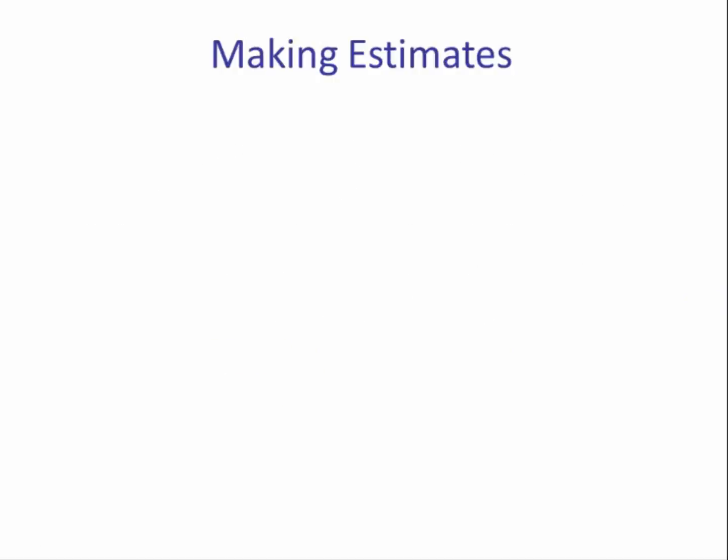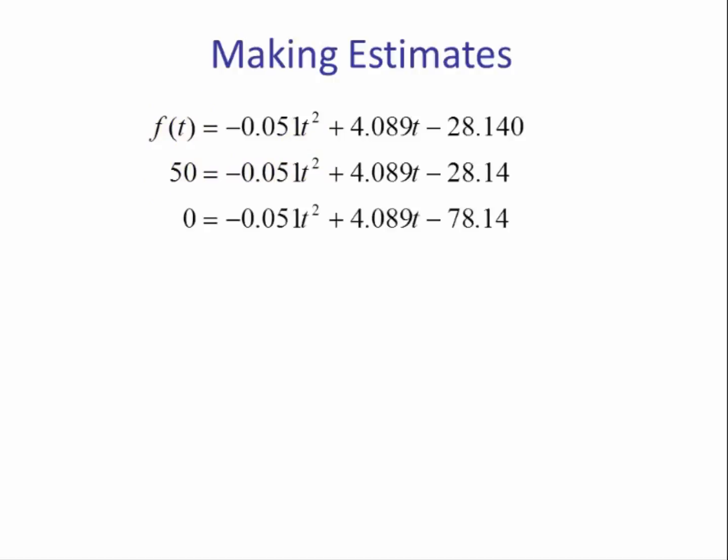To answer the next question, what ages will half of the workers be using a computer? Half means 50%, so we want to know what values of t will make f of t equal to 50. So we take our model, we substitute 50 in for f of t, and then we solve for t. Our first step is to subtract 50 from both sides. Now the quadratic is equal to zero.